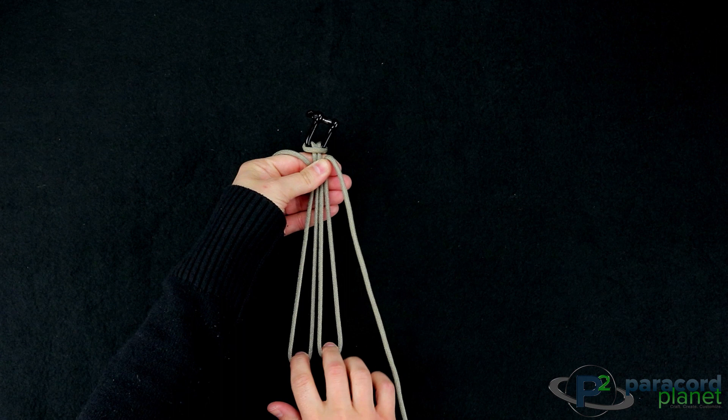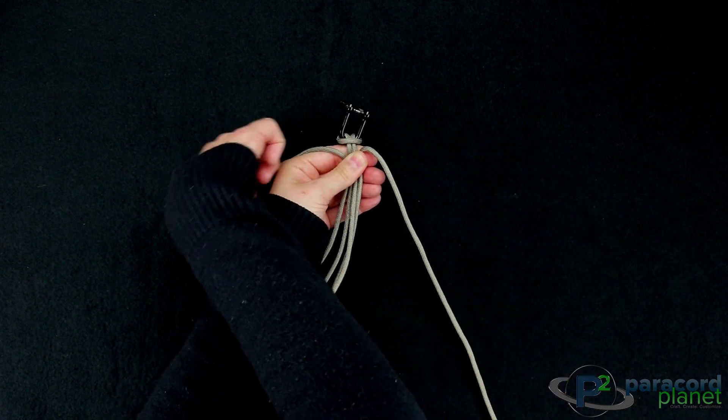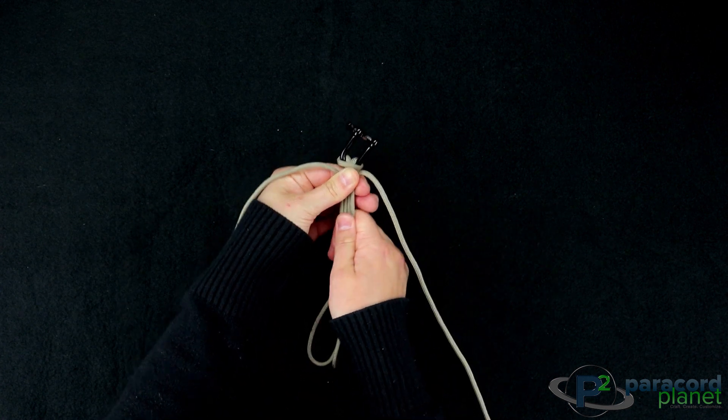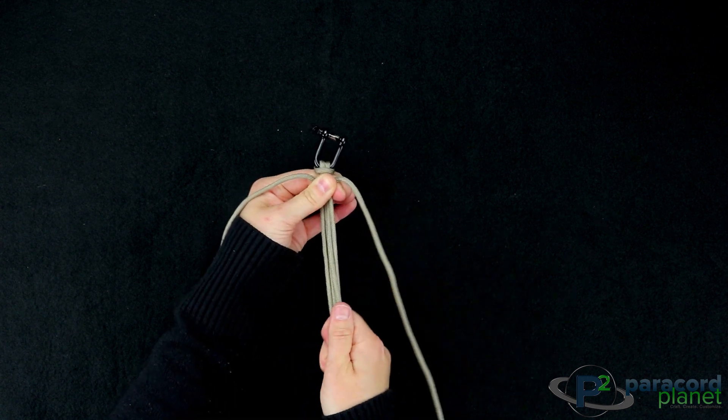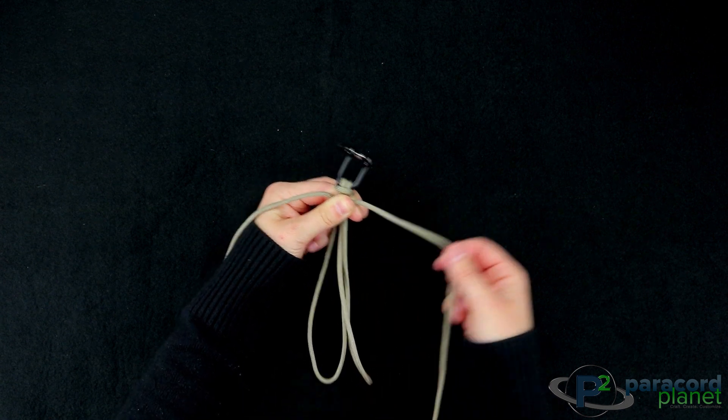You have the two cords here and here, and then these two big loops are all going to act as your base cord. You can just treat it like one big cord. The first thing that you're gonna want to do then, you're gonna go over the top just like this, go behind, and then up through.